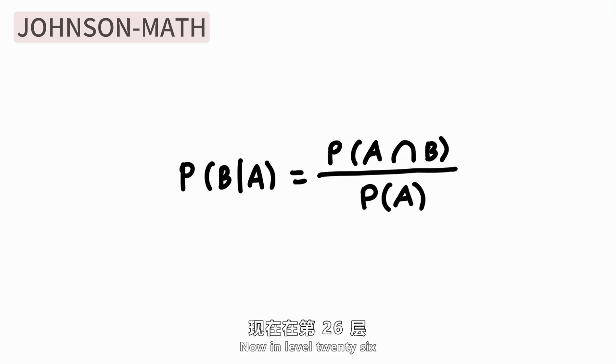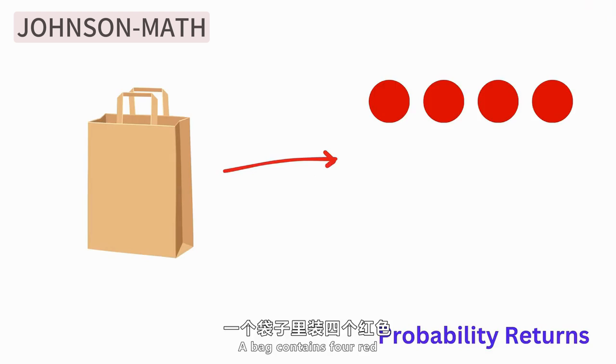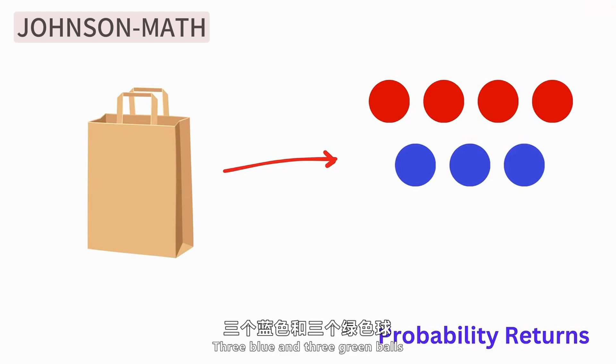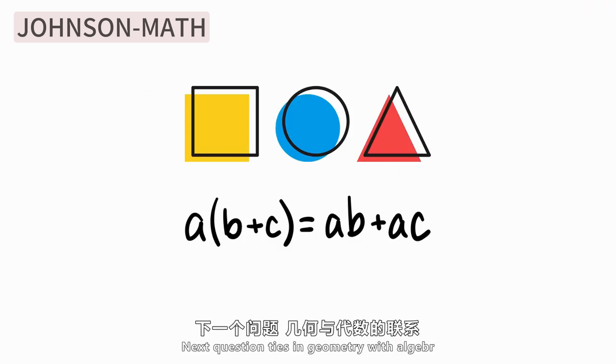Now Level 26 goes a little deeper into probability. There are four red balls in a bag, three basketballs, and three green balls. What is the probability of drawing a red ball or a basketball? The next problem combines geometry with algebra to help students master the basics of conic sections. The parabola equation is y equals 8x squared. Find the focal coordinates and the equation of the directrix.